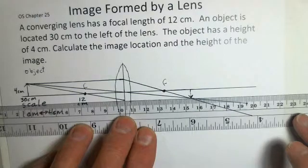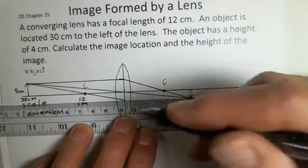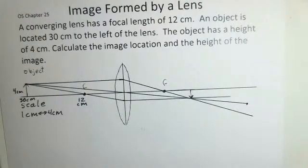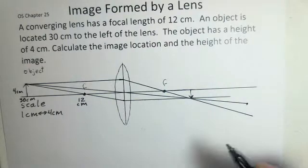More or less parallel, and again it agrees with the crossing point from the first two rays. There's our image.